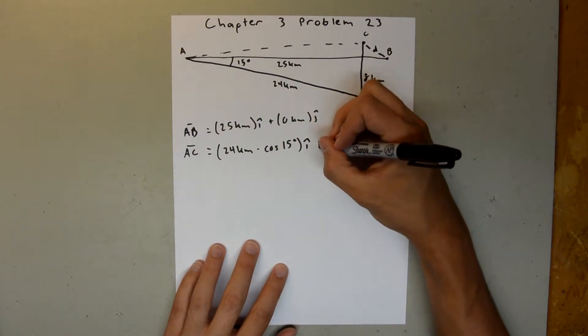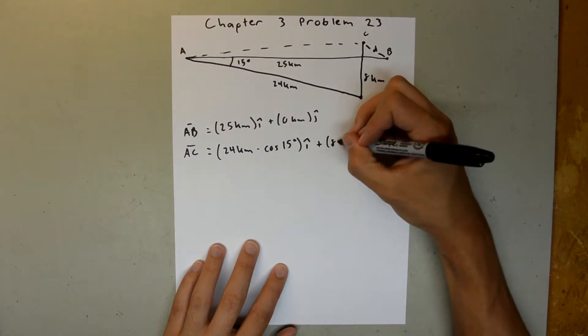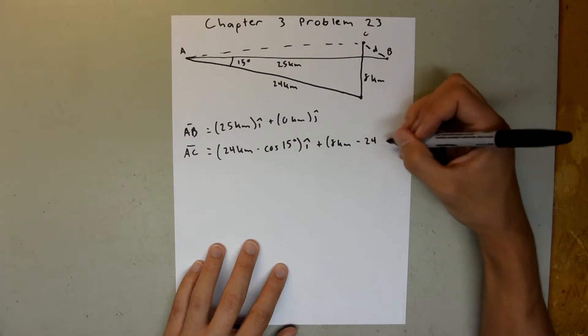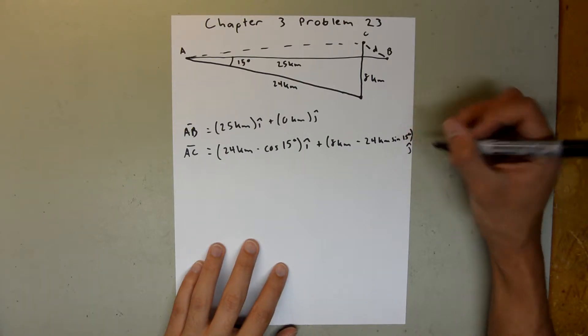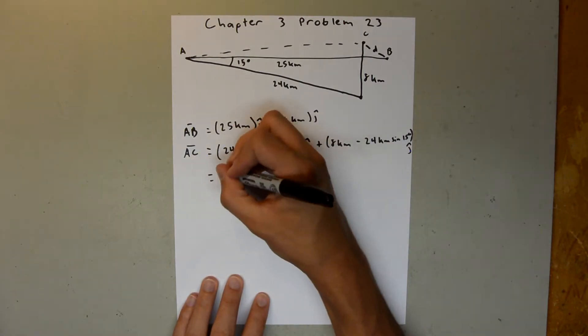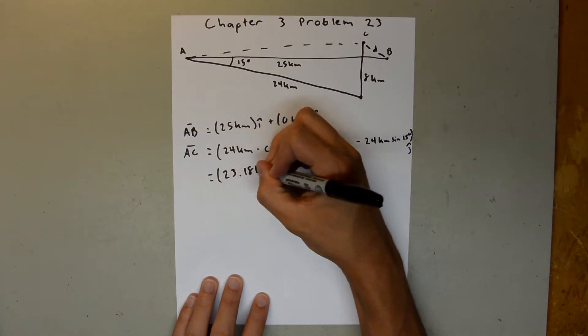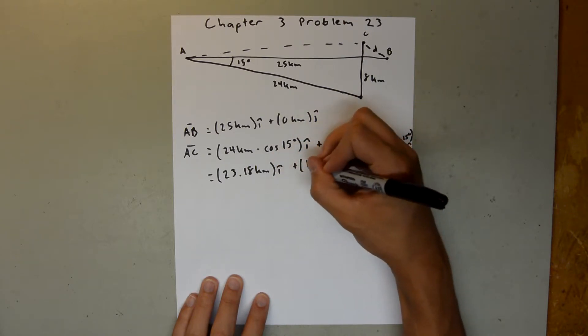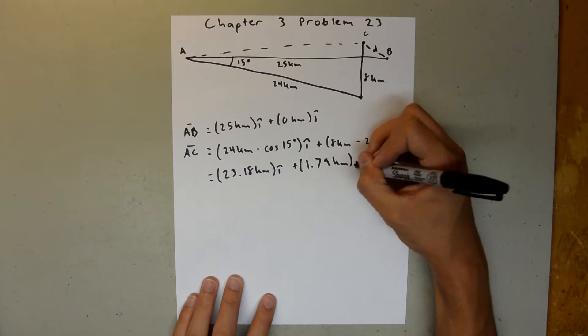And our Y component, we have our 8 kilometers here, minus 24 kilometers, sine of 15 degrees, and that's J hat, and if you plug those into your calculator, you should get about 23.18 kilometers I hat, plus 1.79 kilometers J hat.